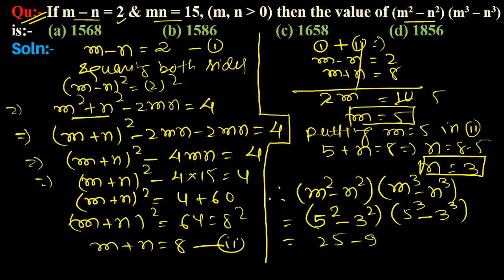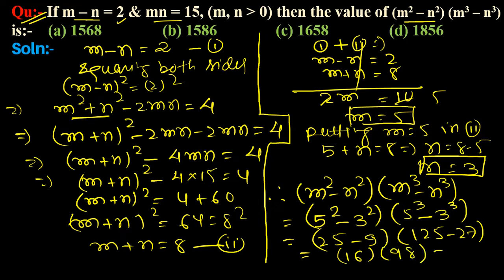So the answer is 25 minus 9, and 125 minus 27, which equals 16 into 98, equal to 1568. So option A is the correct answer.